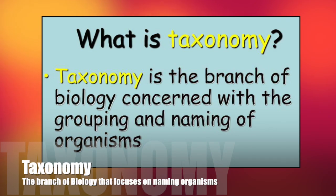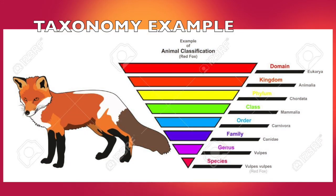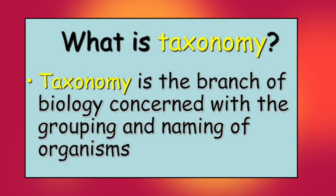This branch of biology is called taxonomy. Taxonomy is the science of naming and grouping different types of life forms. The cell theory is very important because it helps scientists with taxonomy — the branch of biology that deals with naming and grouping organisms.